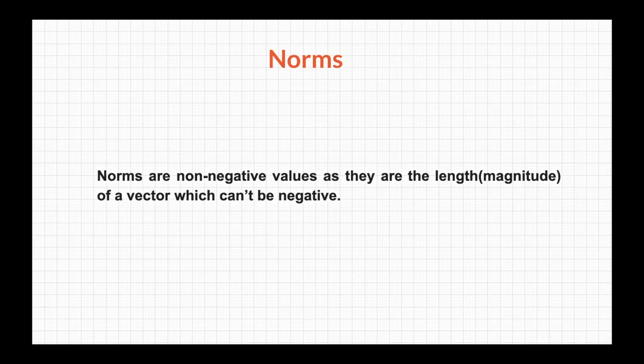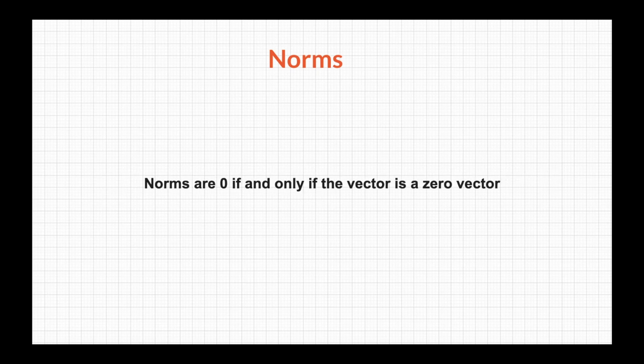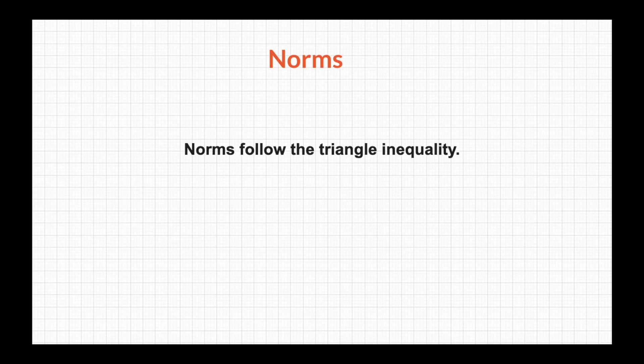Norms are any functions characterized by certain properties. The first property is that norms are non-negative values, as they represent the length or magnitude of a vector, which cannot be negative. The second characteristic is that norms are zero if and only if the vector is a zero vector.